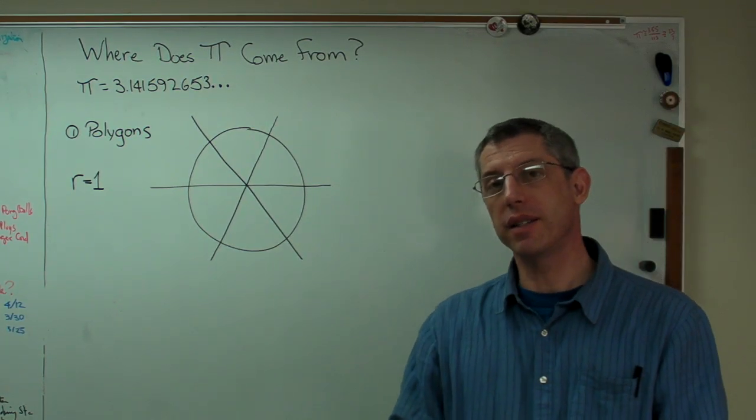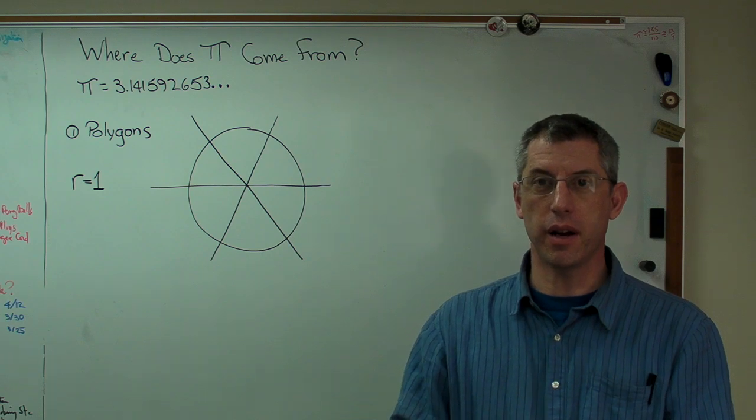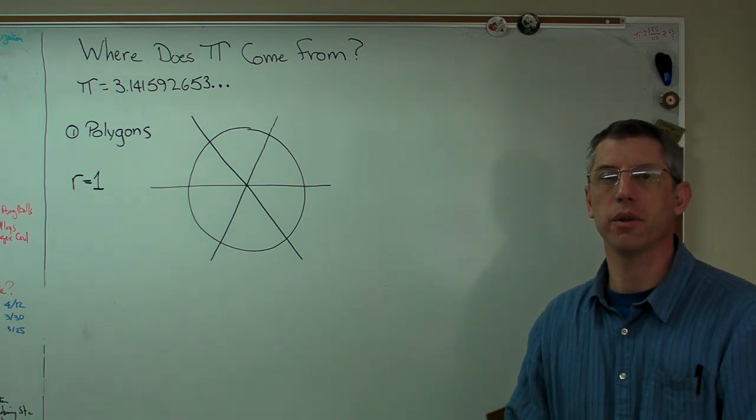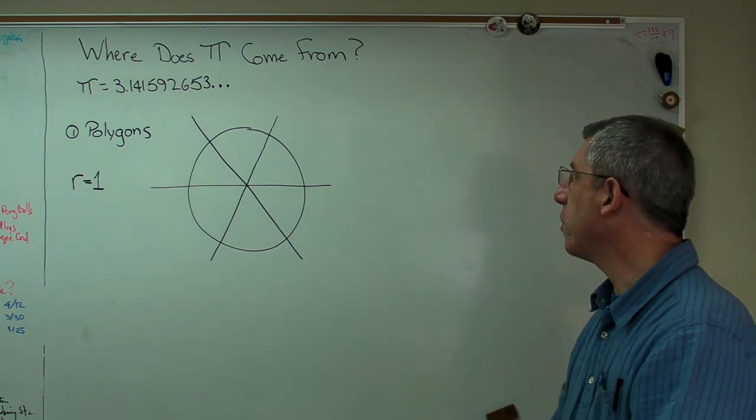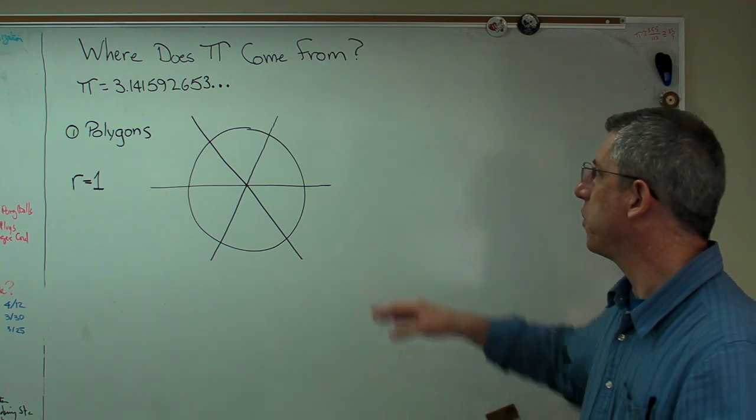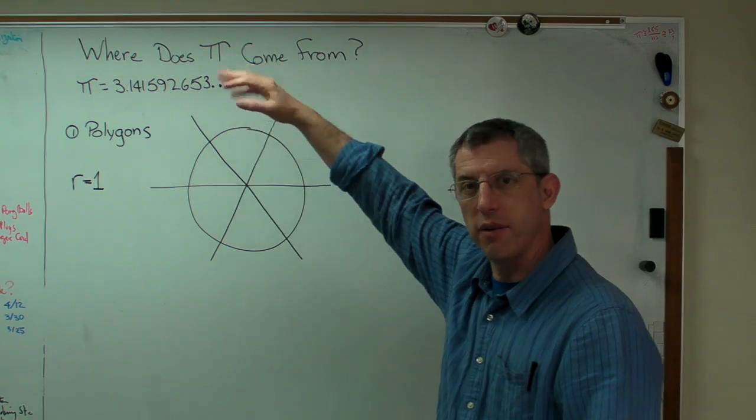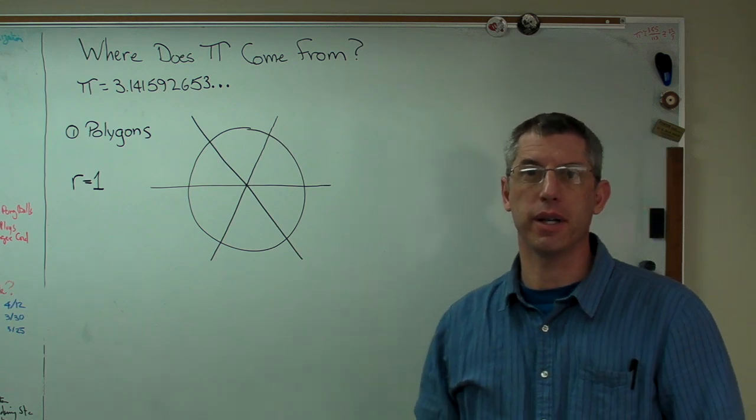Okay, today we're going to do something that's not exactly strength of materials, but it's something a lot of my students wonder about. So I thought it was worth perhaps talking about. We all know what pi is. It's 3.141592653, whatever. It goes on forever because it's irrational.